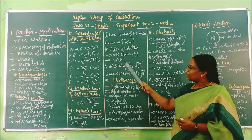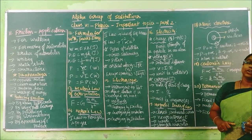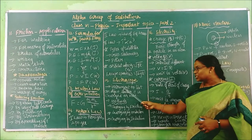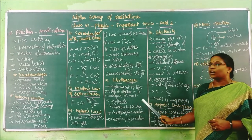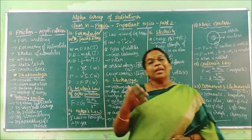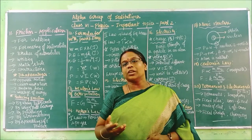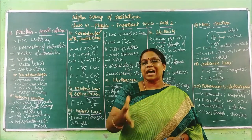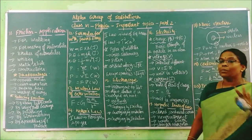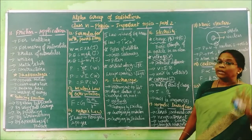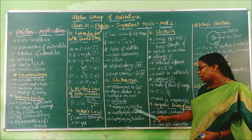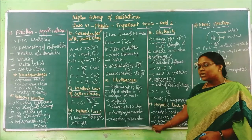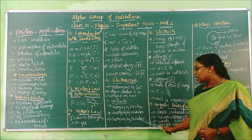The gravitation lesson topics are now over. We are moving to electroscope. What is an electroscope? It is an instrument to test whether an object is charged or not. There are three methods to charge an electroscope: charging by friction, charging by conduction, and charging by induction.